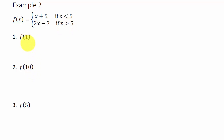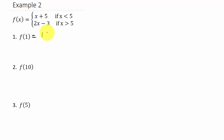For the first one, f of 1: since 1 is less than 5, it falls into the first piece. We plug 1 in for x into x plus 5, so that's 1 plus 5, which gives us 6.